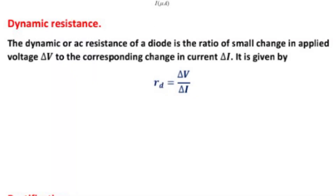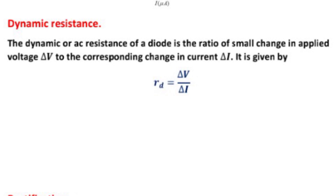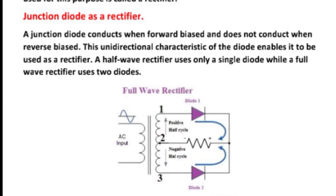Now I am going to tell you about rectification. The process of converting AC into DC is called rectification, and the device used for this purpose is called the rectifier. A junction diode conducts when forward biased and does not conduct when reverse biased. This unidirectional characteristic of the diode enables it to be used as a rectifier. A half wave rectifier uses only a single diode while a full wave rectifier uses two diodes.